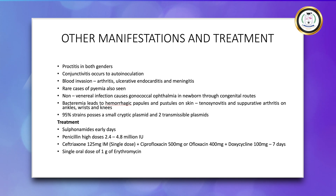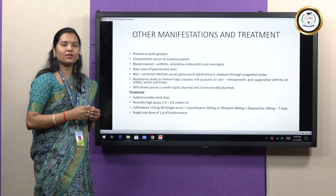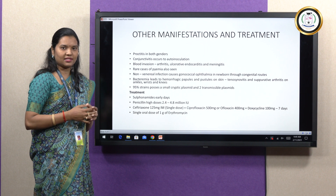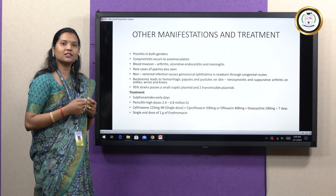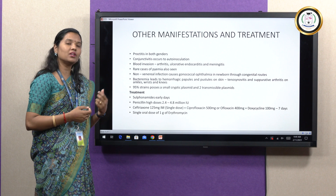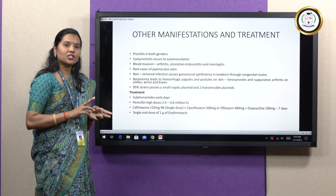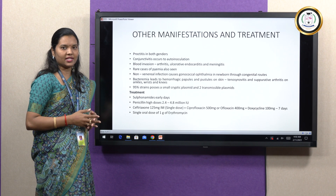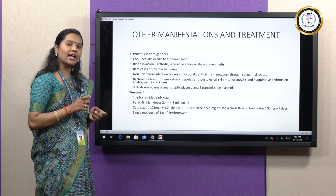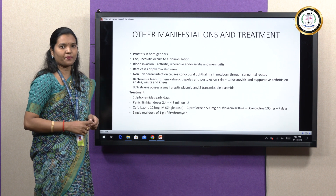The CDC USA suggested the following drug dosage regimen: ceftriaxone 125 mg as a single intramuscular dose, along with ciprofloxacin 500 mg or ofloxacin 400 mg, plus doxycycline 100 mg — given twice a day for 7 days — or erythromycin 1 gram as a single dose.